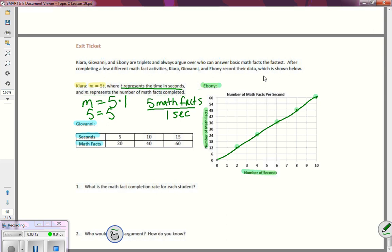And if they form a straight line, I should be able to see where my unit rate is. So at one second, I can see that she can get six math facts done. So one second, she can get six math facts done.